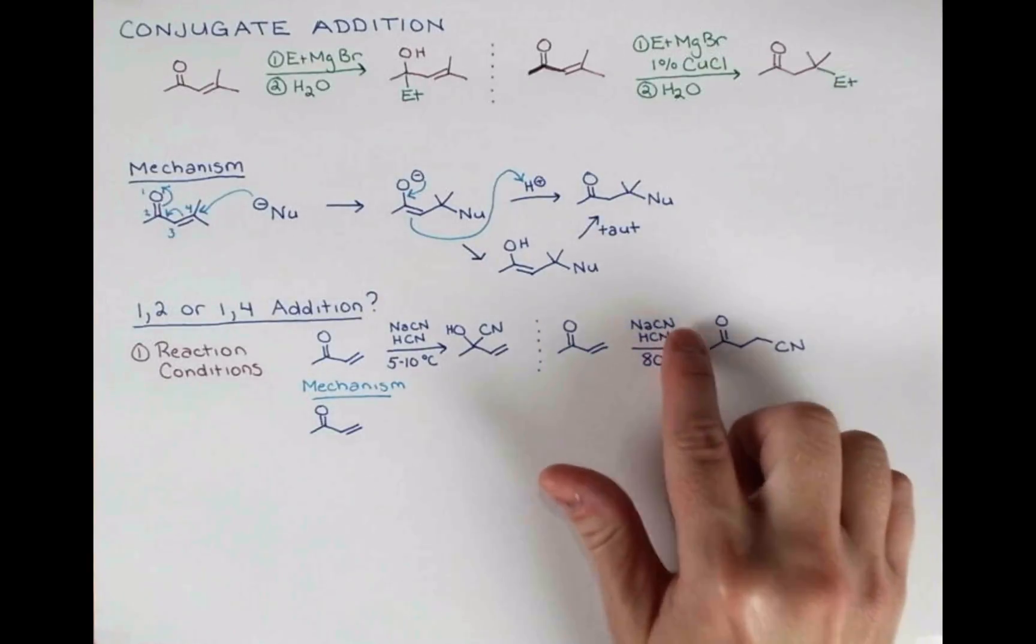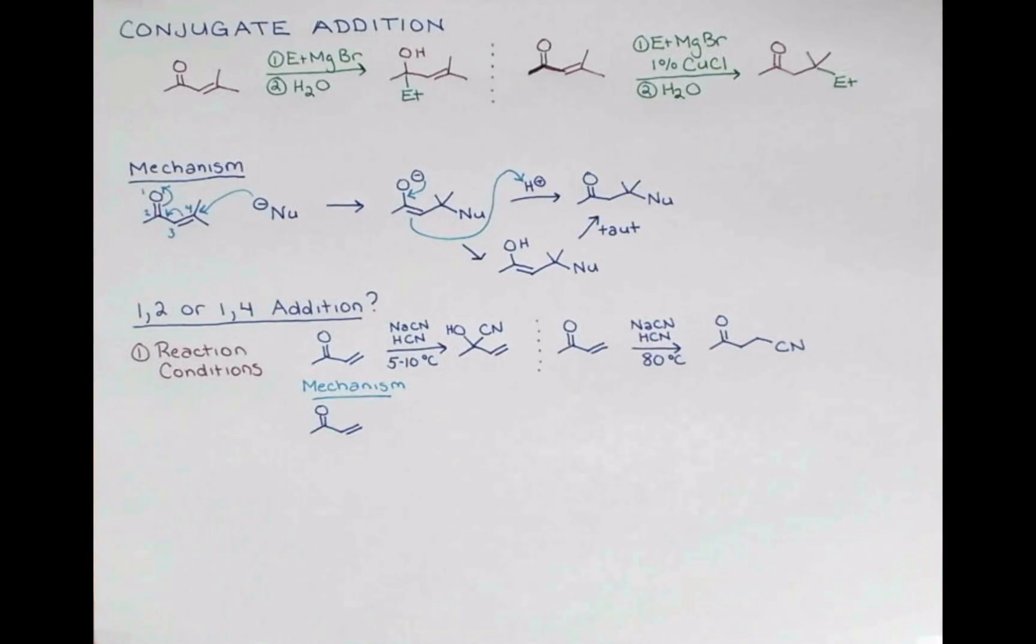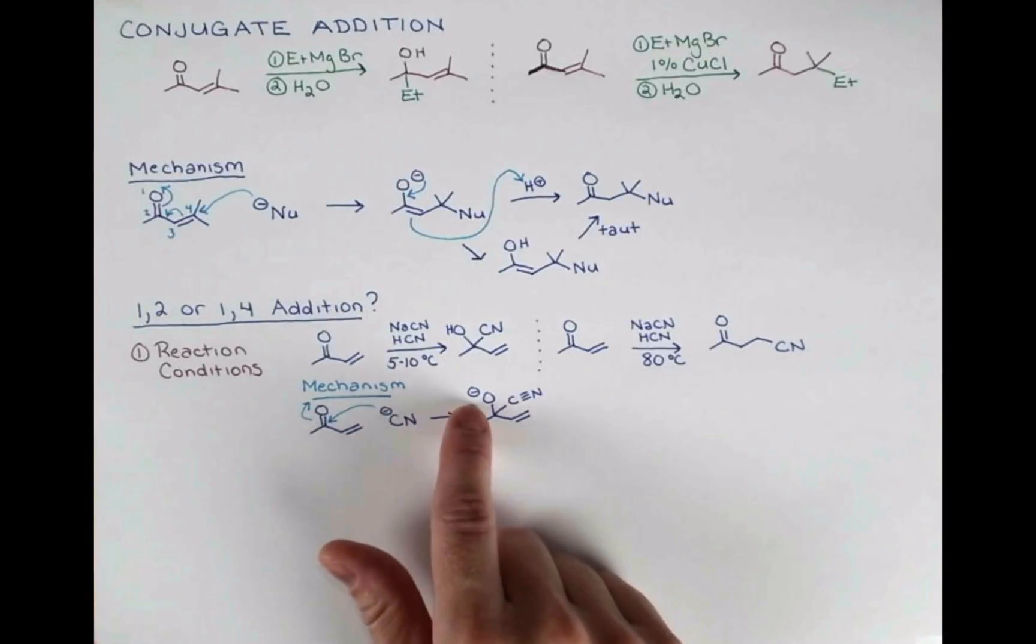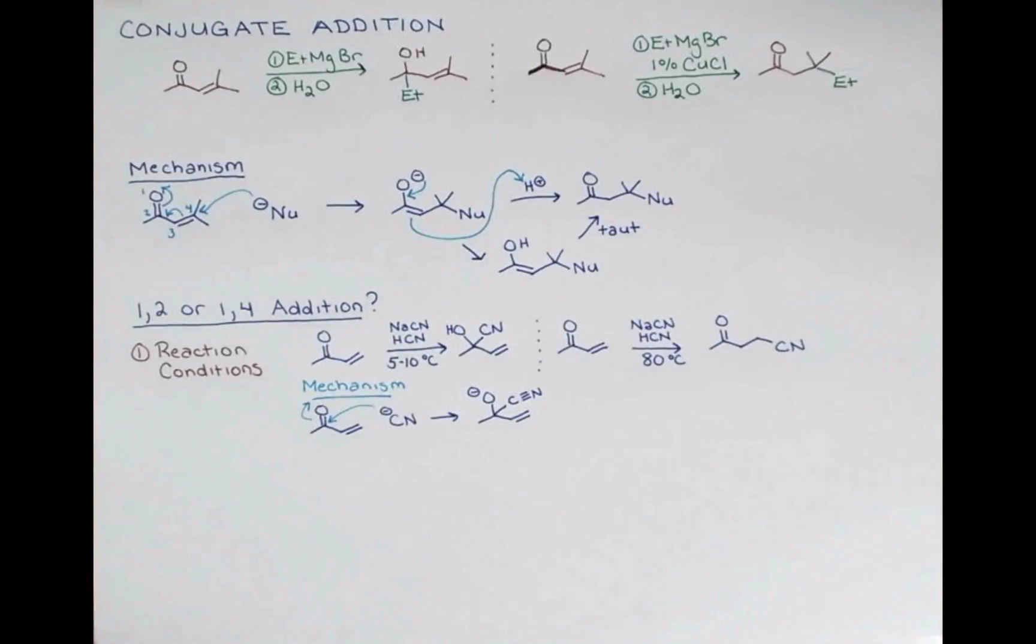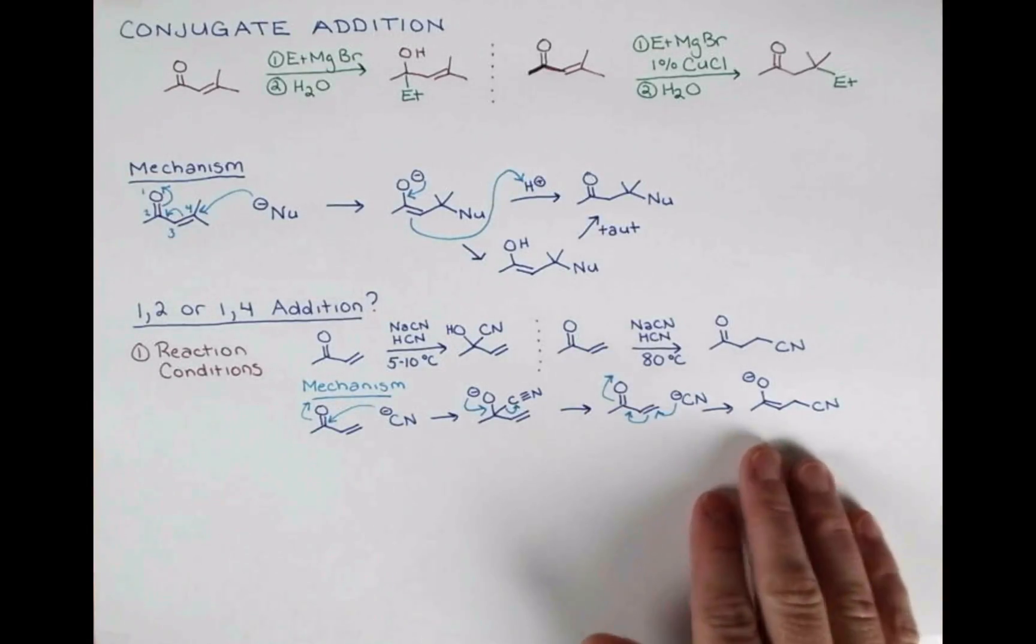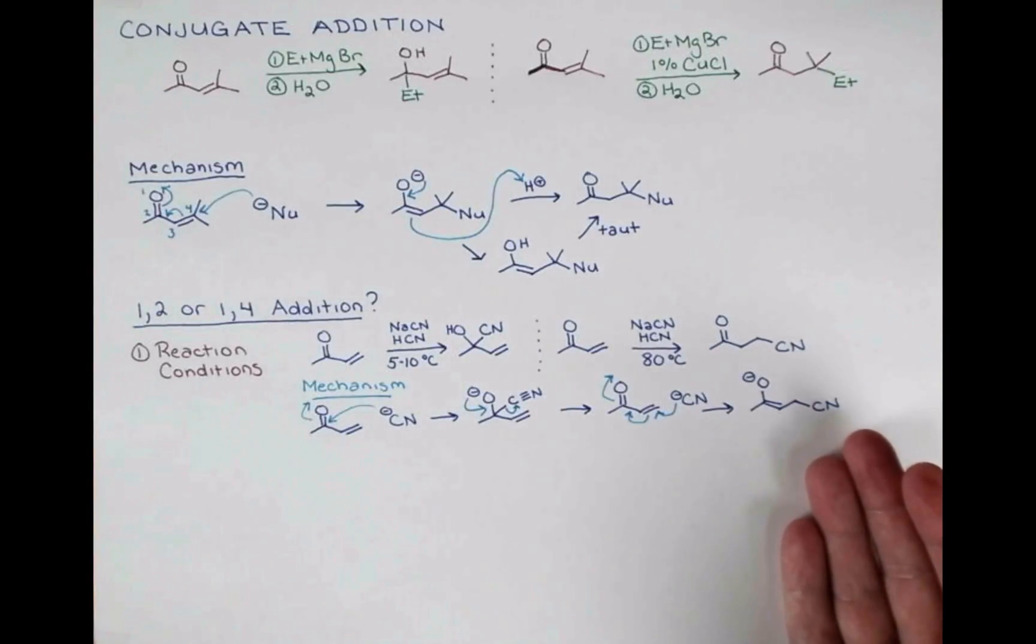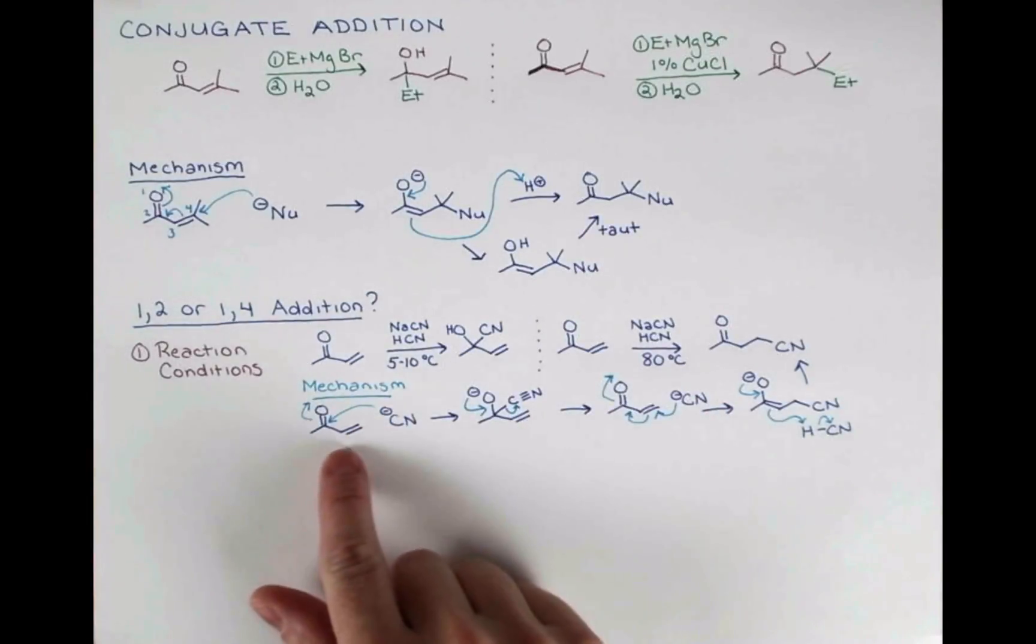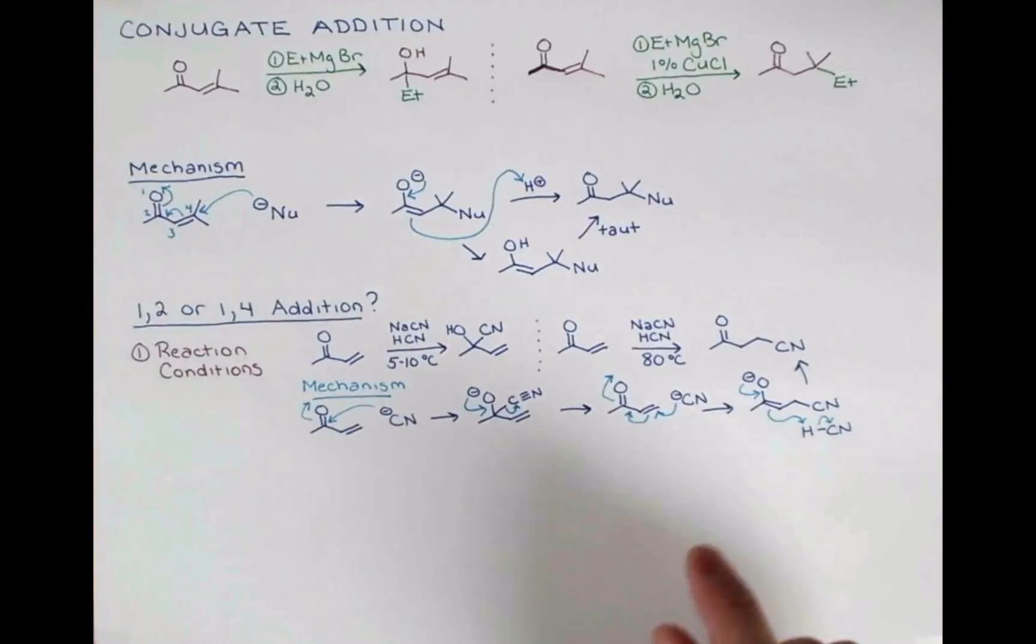So in this process, some of the cyanide is going to add to the carbonyl. That gives this intermediate. Now cyanide is a pretty stable anion, so at warm temperatures, these electrons can push back down and kick out CN-. Now some of the cyanide can add in a 1-4 fashion. Now this can become protonated by the HCN in solution, and now there will be no anion in the molecule that can kick out this group. So under these heated conditions, where the reaction, the 1-2 addition becomes reversible, we can funnel all of this to our 1-4 addition product.